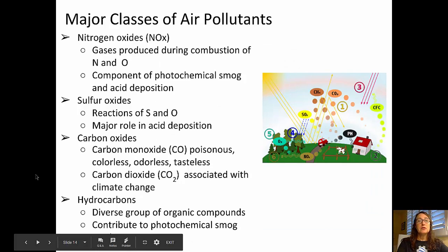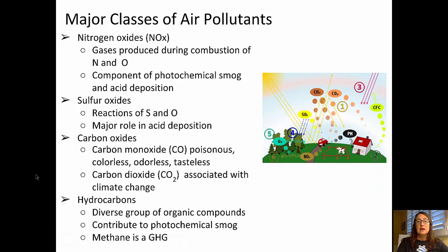Some additional classes of air pollutants include nitrogen oxides. These are gases produced during combustion, and they are a component of photochemical smog and of acid deposition. Sulfur oxides form from the reaction of sulfur and oxygen in the atmosphere, and these play a major role in acid rain.